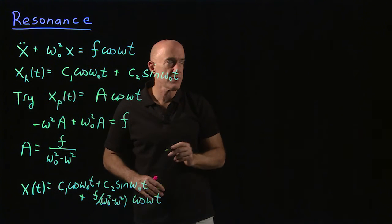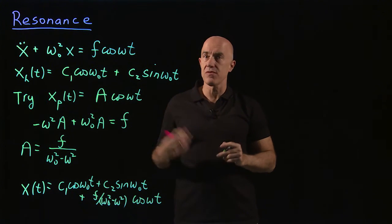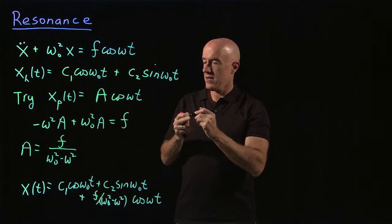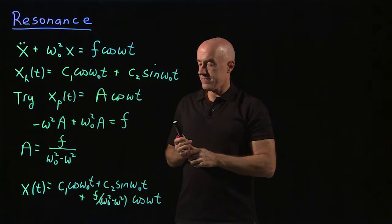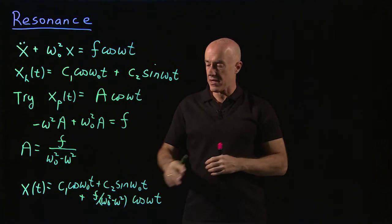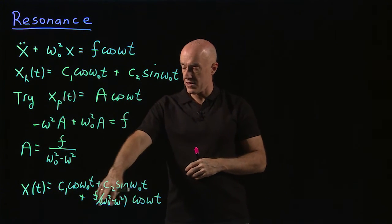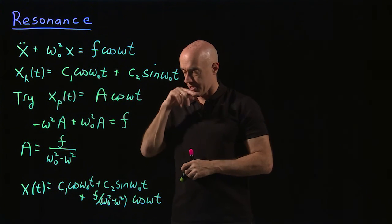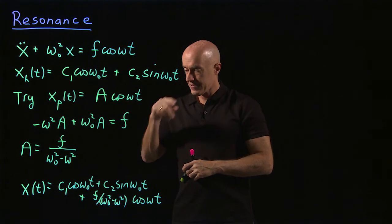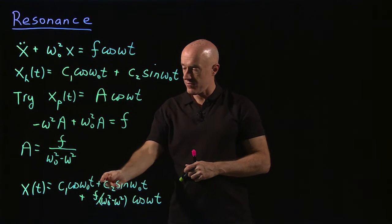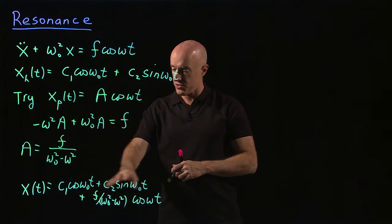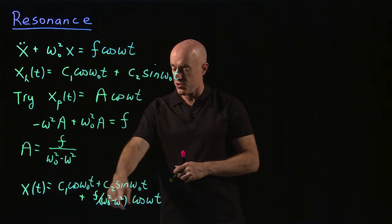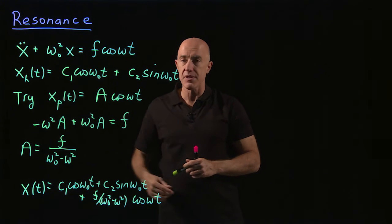And that's our general solution. Now, if we consider omega going to omega naught, it's a somewhat tricky expression. We're not yet done — if omega goes to omega naught, we don't really know what to do with this denominator. So what we need to do is satisfy the initial conditions.